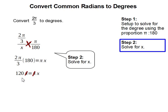And then the pi cancels out on both sides of the equal sign. And our resulting answer is 120 degrees. And this completes our problem.